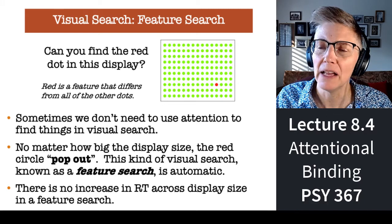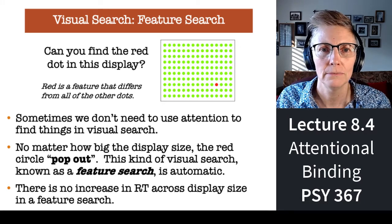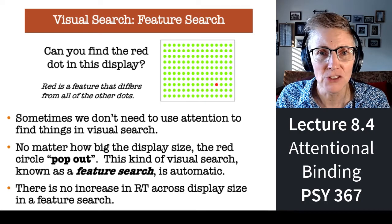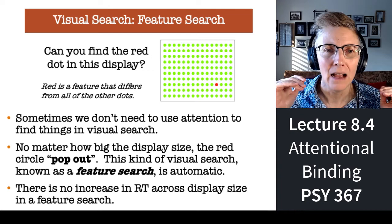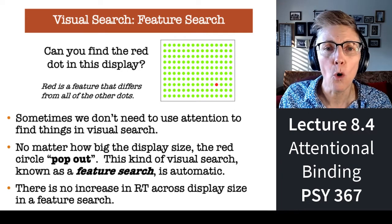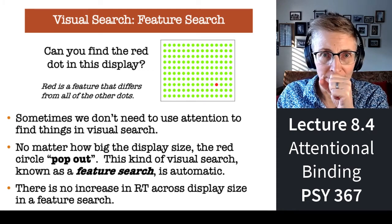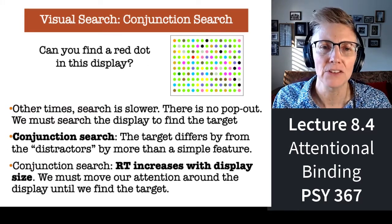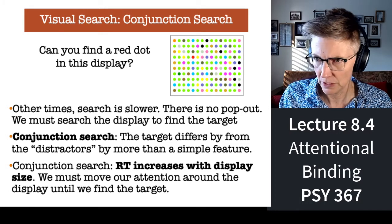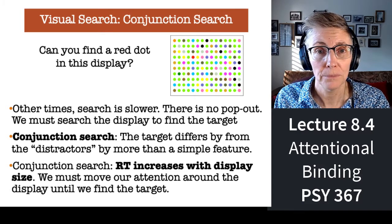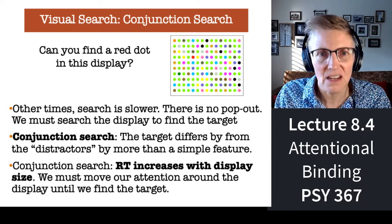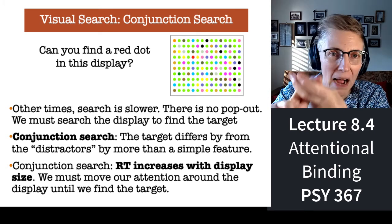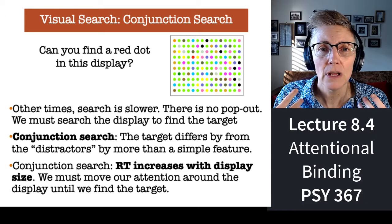If I ask you to look at the display on the right-hand side and say find the red circle, you do it immediately. That is a feature search — the red circle pops out. You don't need any attention; you're fast at detecting it no matter how many other things are in the display. I could fill a whole wall with green dots, put one red dot on there, and you'd find it immediately. But if I ask you to find the red dot in a display with a lot of different stuff, it's going to take you a lot longer — because you have to combine features, and that combination requires attention.